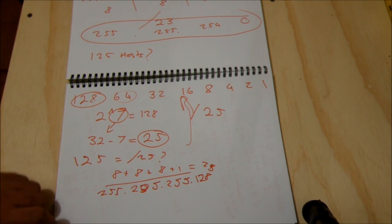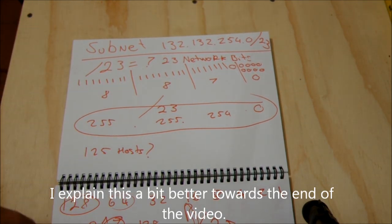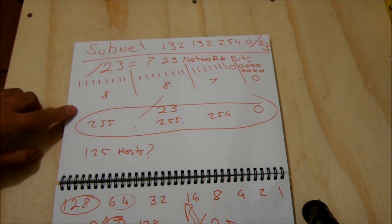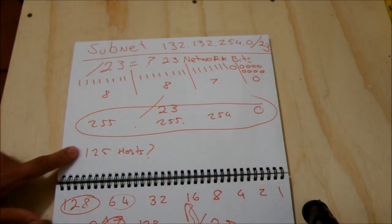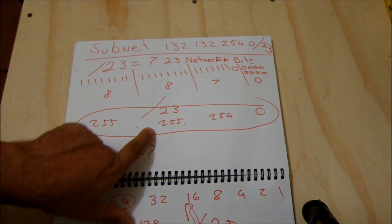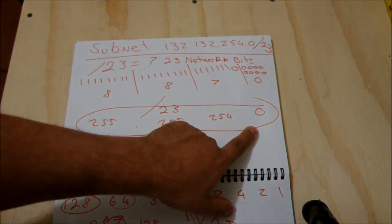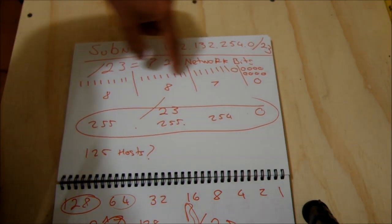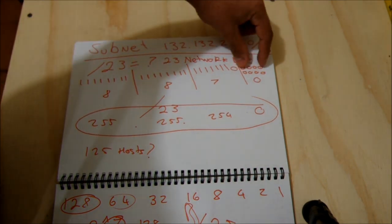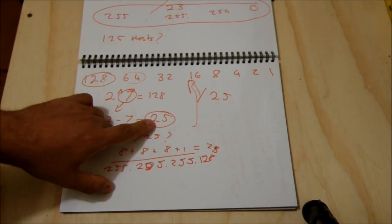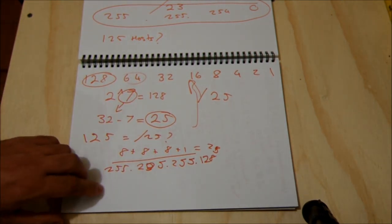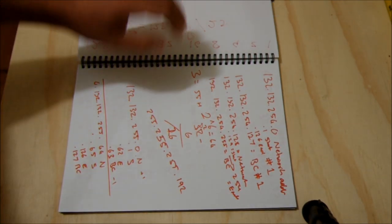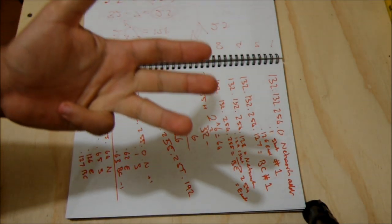Where are those numbers coming from? Remember the binary explanation for slash 23 — the same method applies. For a slash 25, we have 8 bits plus 8 bits plus 8 bits plus 1 bit. In decimal form, 8 bits equals 255, 8 bits equals 255, 8 bits equals 255, and 1 bit equals 128. So slash 25 is 255.255.255.128. Now let's figure out the network address, start, end, and broadcast for LAN 1.